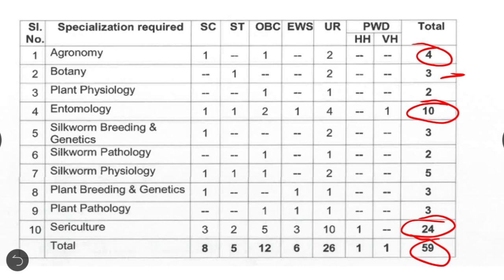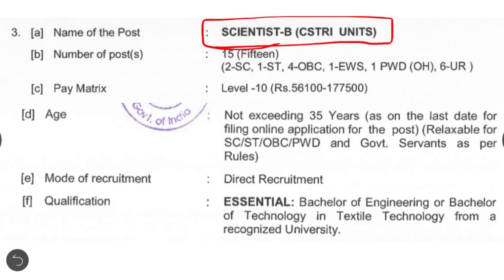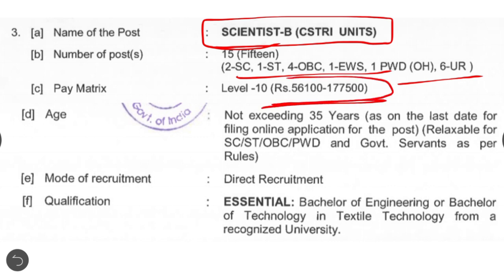The third post is also Scientist B, but for the CSTRI unit — these 15 seats will be utilized for Central Silk Technological Research Institute Bangalore and its units. There are total 15 seats available, 6 for unreserved and remaining are reserved. Pay scale is rupees 56,100 to 1,77,500, age limit is 35 years, and mode of recruitment is direct recruitment.